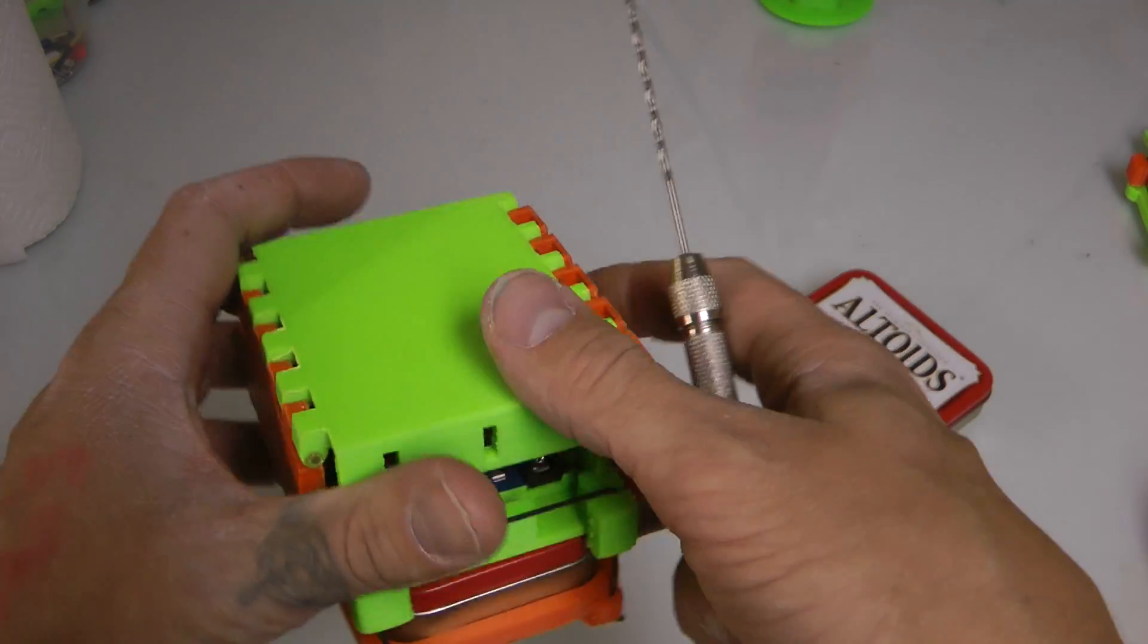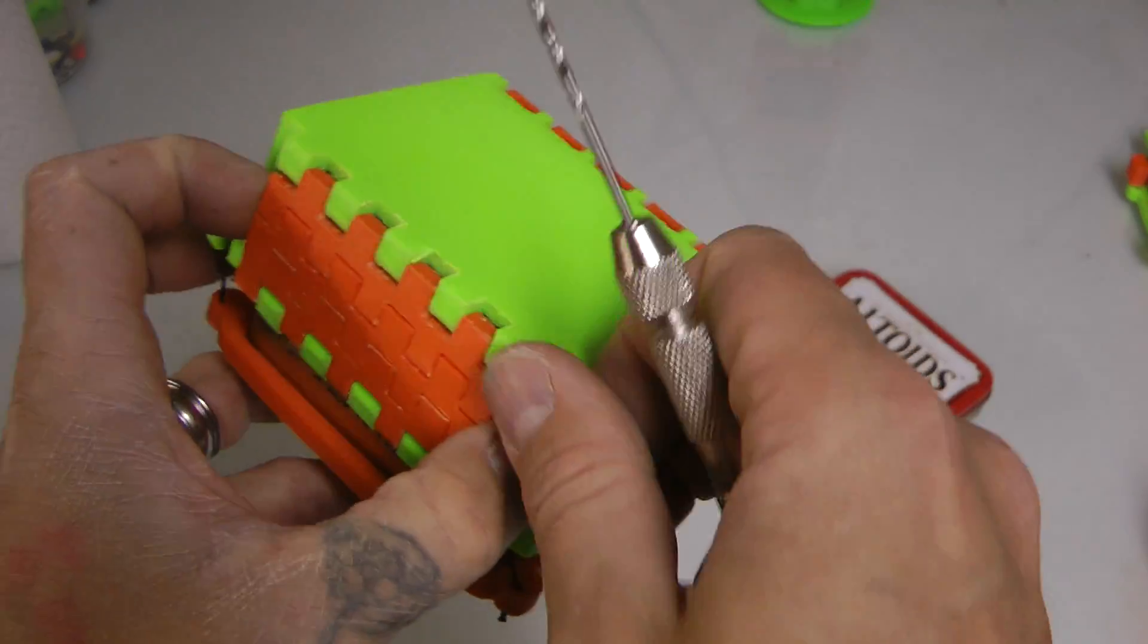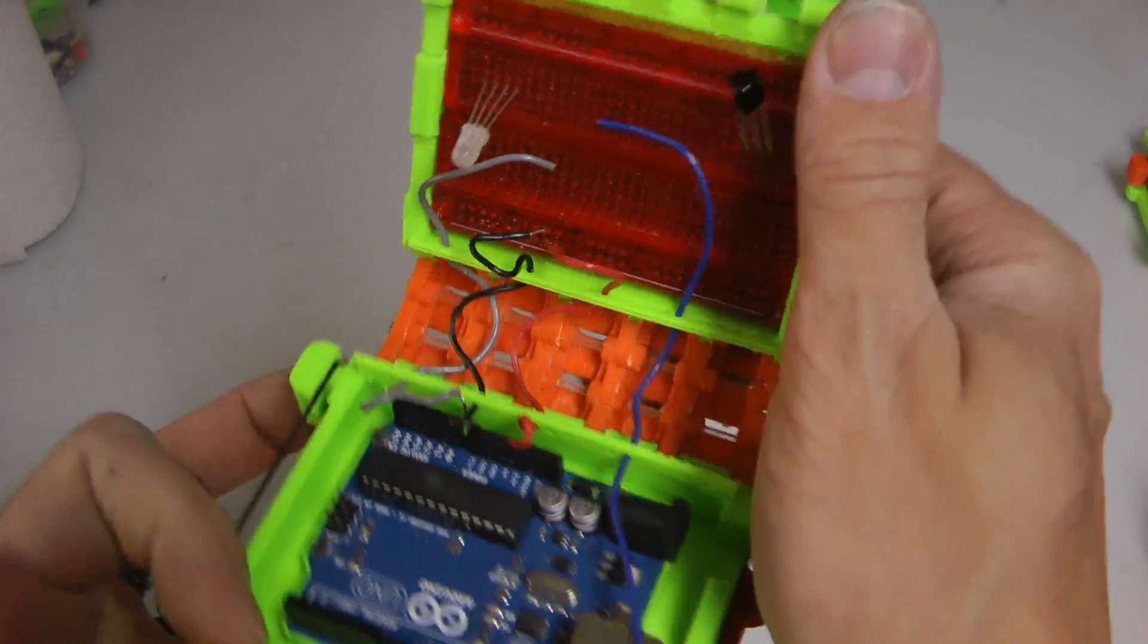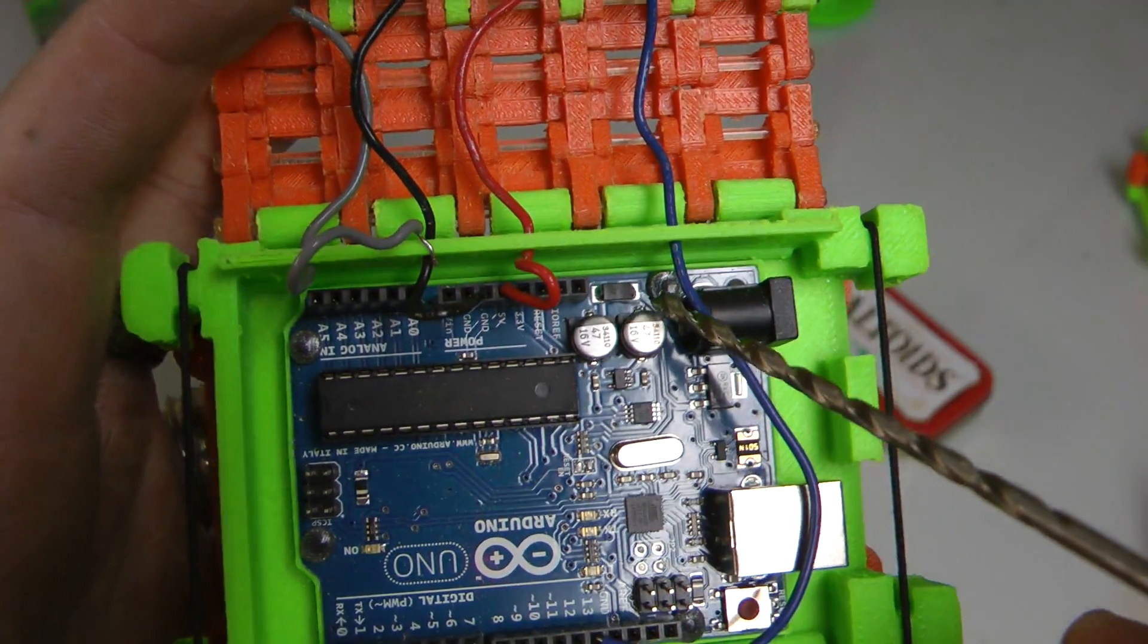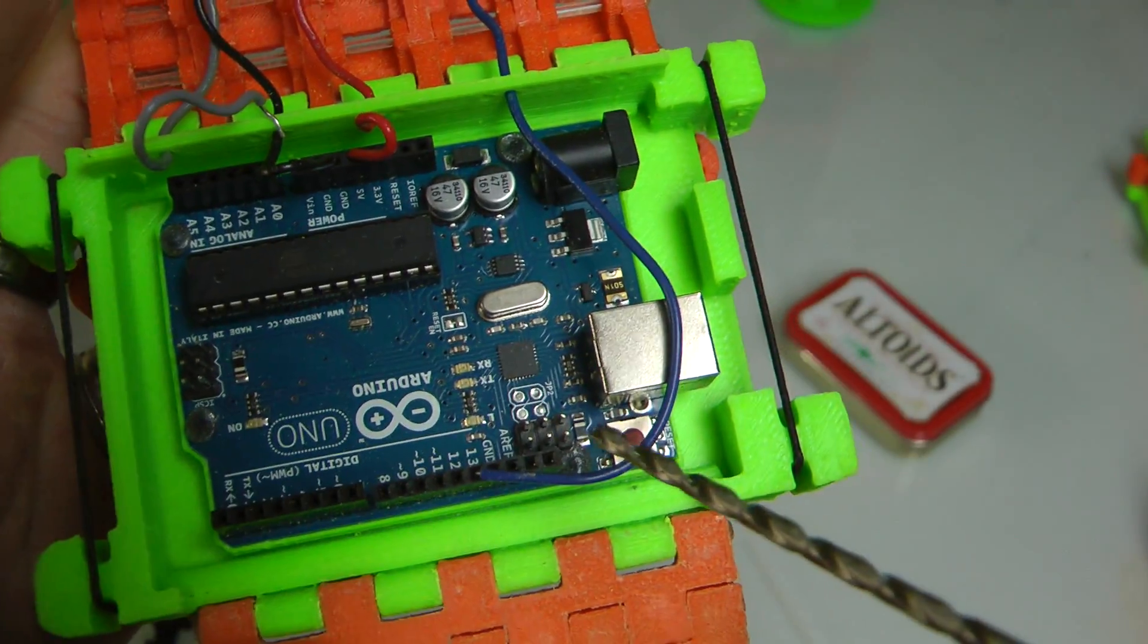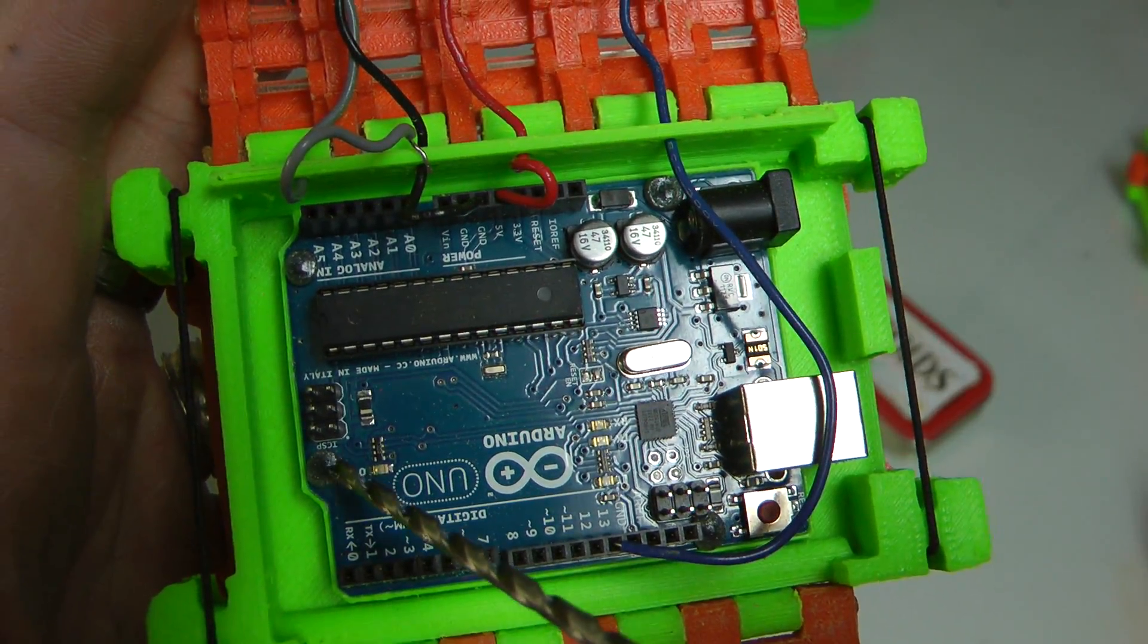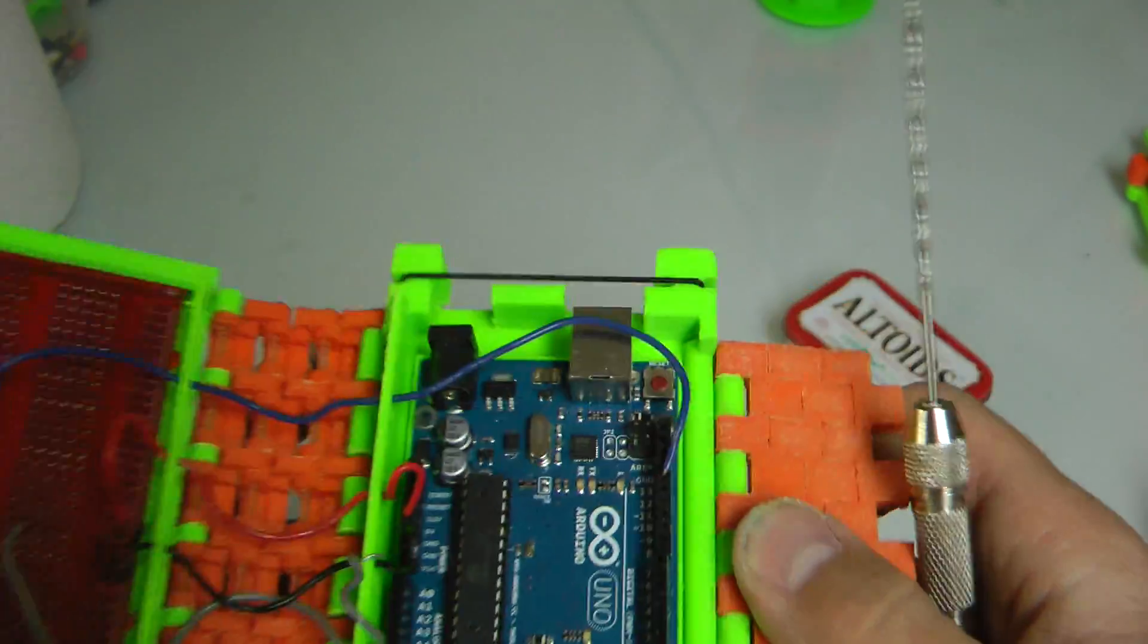Also, the microcontroller is held in place by 3 millimeter PLA rivets now, instead of screws. Because I didn't want to use any screws. Sick of screws. So you can see the PLA rivets right there. If you're unfamiliar with PLA rivets.